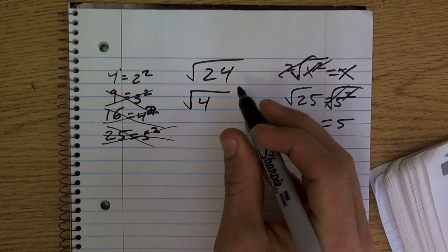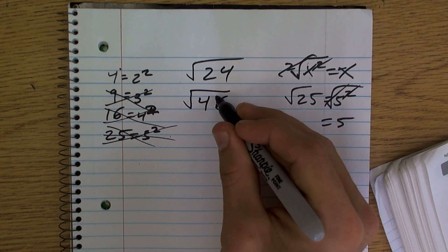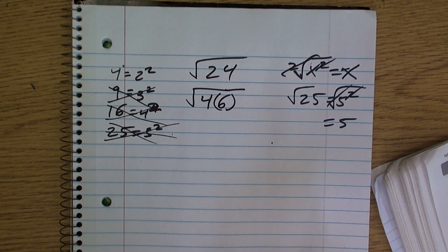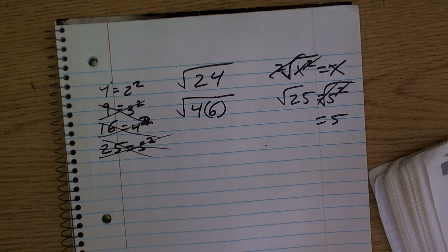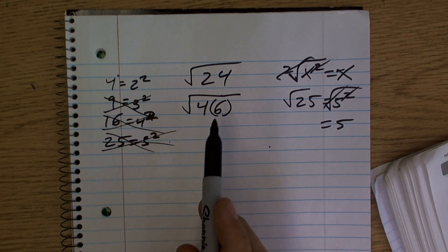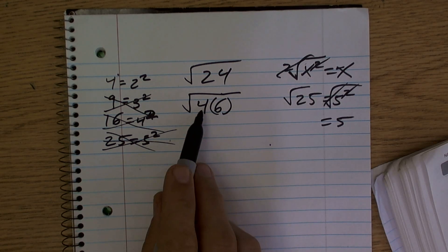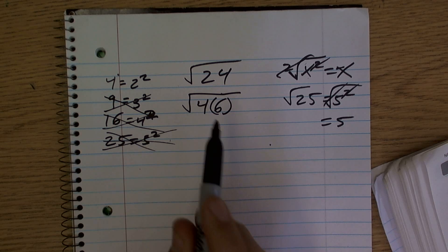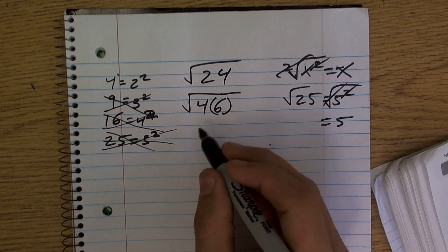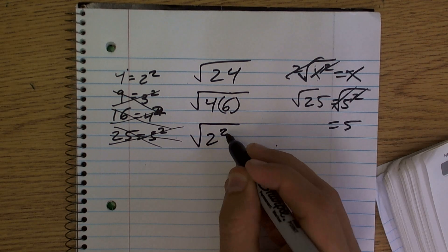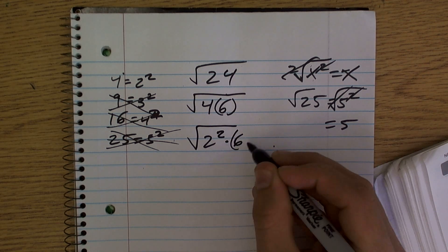So what I'm going to do is I can rewrite this as 4 times 6. I haven't changed the math problem at all. I haven't changed anything. I just rewrite 24 as 4 times 6. Now, the only reason why I want to do that, like I said, we're trying to simplify this. So now I can say, oh well, I can rewrite 4 as 2 squared. 2 squared times 6.